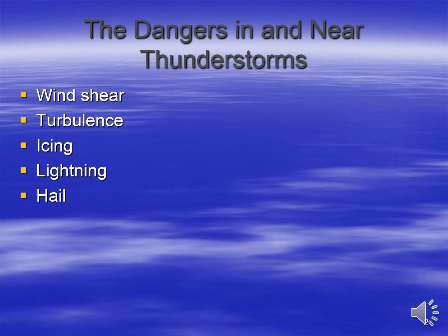The reason that thunderstorms are so impactful to aviation is because of the hazards associated with them. Wind shear, turbulence, and icing all tend to be moderate or severe in thunderstorms. Lightning and hail are also major hazards in and near a thunderstorm.